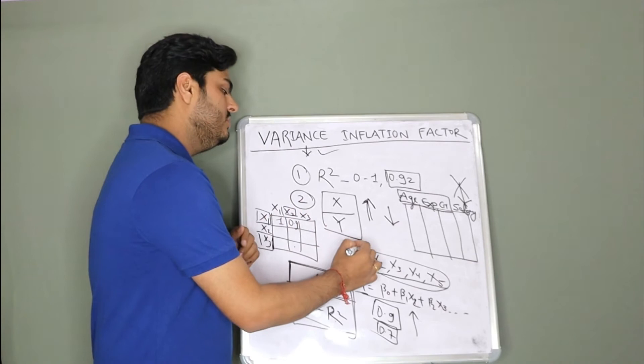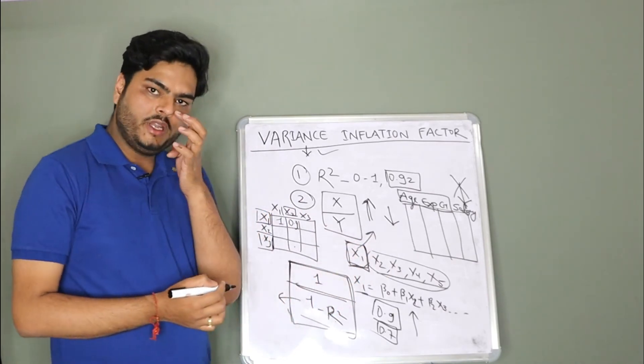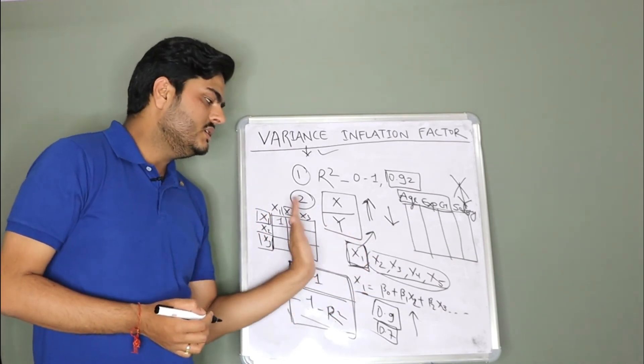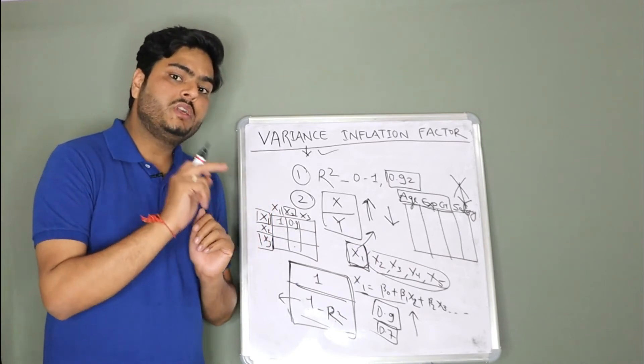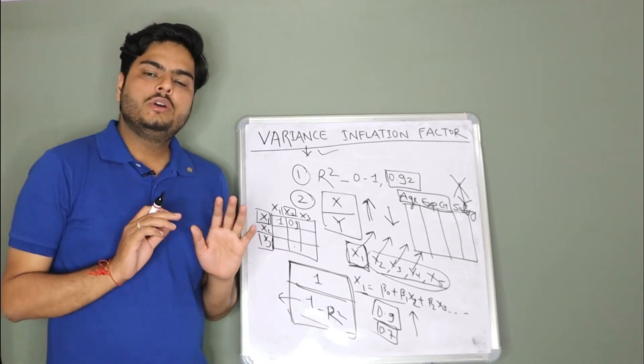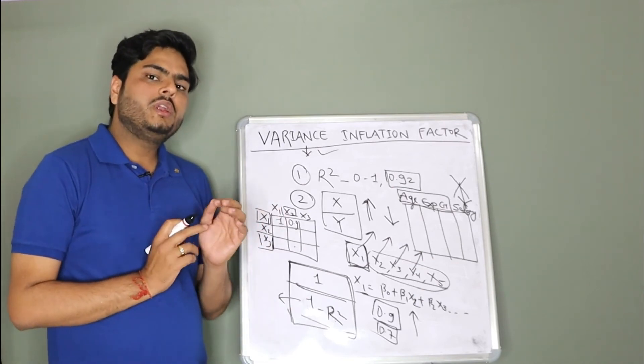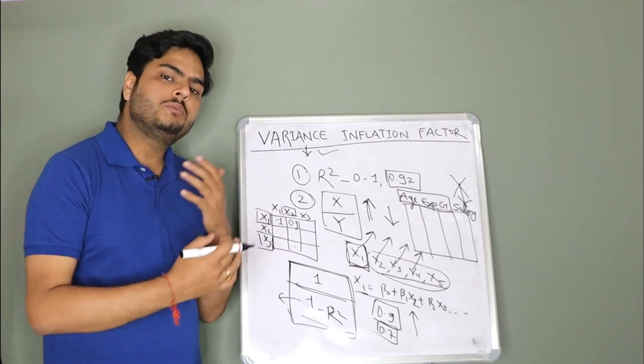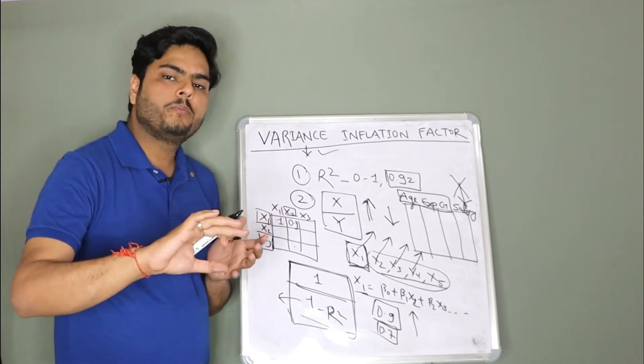I will have one VIF number for x1. Similarly, I will take x2 in my target, rest of the features in an independent feature, fit a model, one VIF for x2, one VIF for x3, one VIF for x4. So what we do typically is we run VIF for all the columns in the data in one shot.